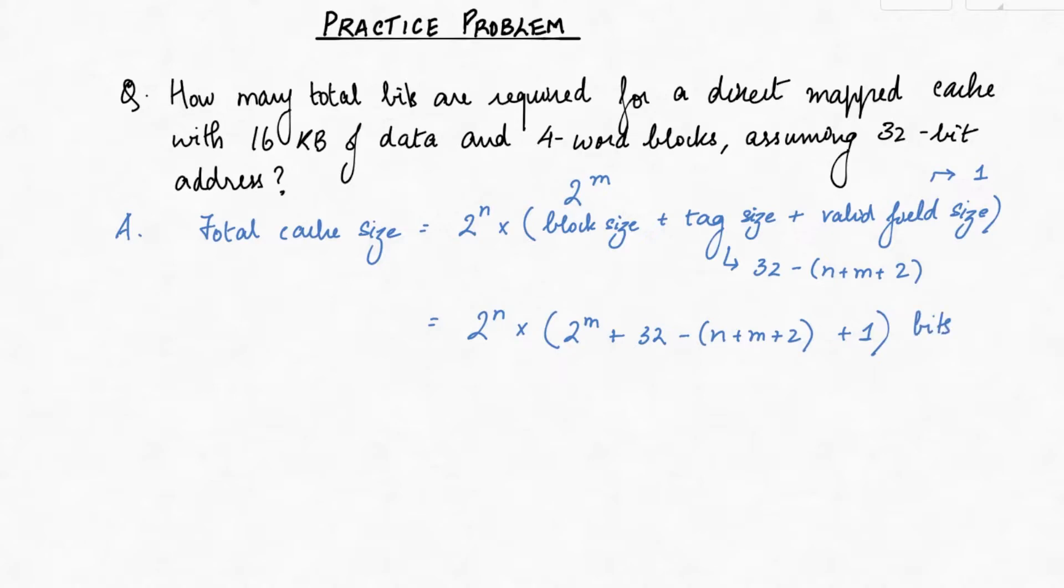With this information, we have broken down the above formula to suit our problem. Now, we will find the total number of words. 16 kb is 2 to the power 14, then divided by the size of each word which is 4 results in 2 to the power 12. We have taken 1 word equal to 1 byte as we assume it is byte addressable.